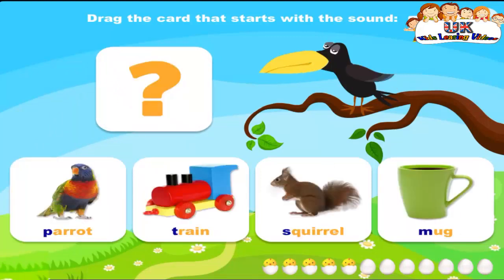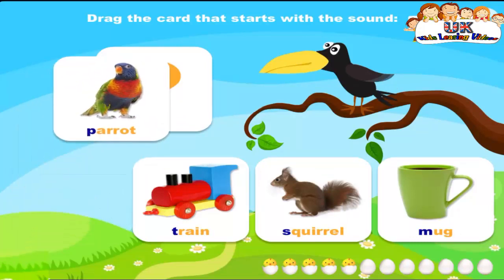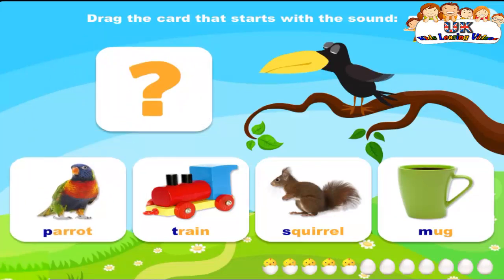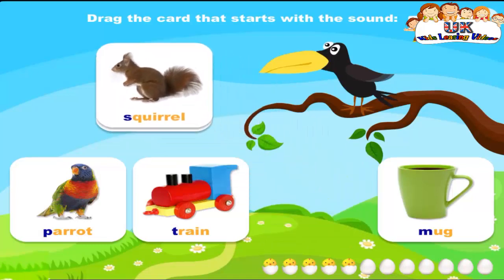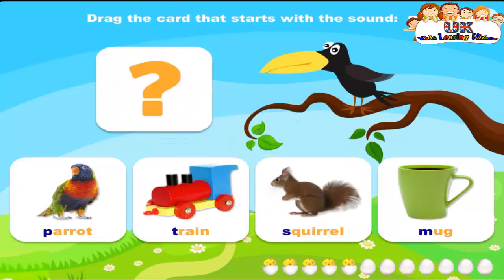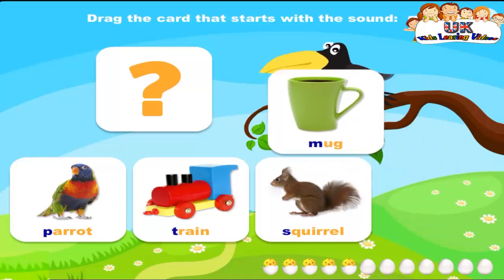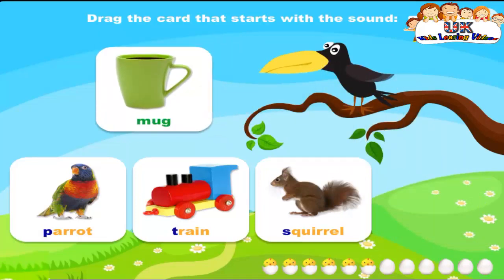Drag the card that starts with the sound M. Parrot. Drag the card that starts with the sound M. Train. Drag the card that starts with the sound M. Squirrel. Drag the card that starts with the sound M. Mug. That's it. Mm, mm, mug.